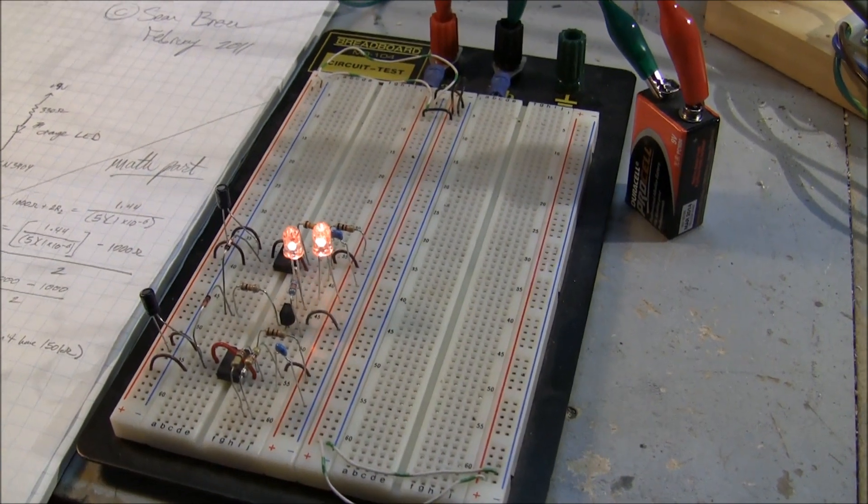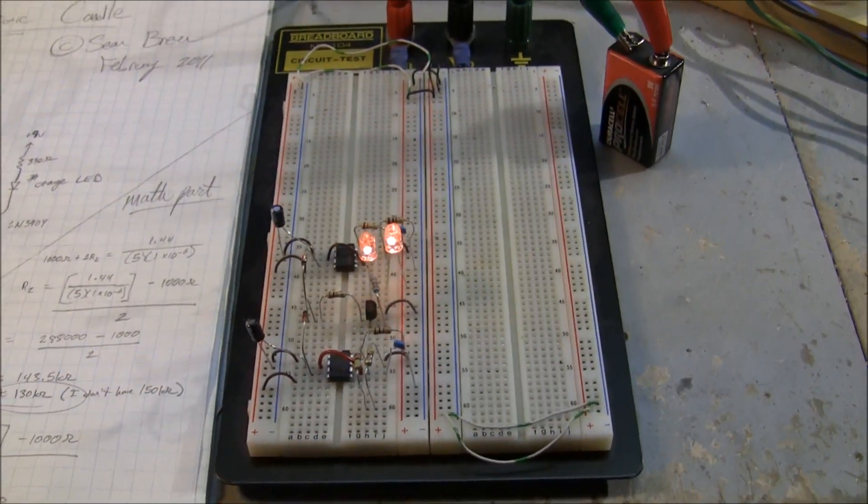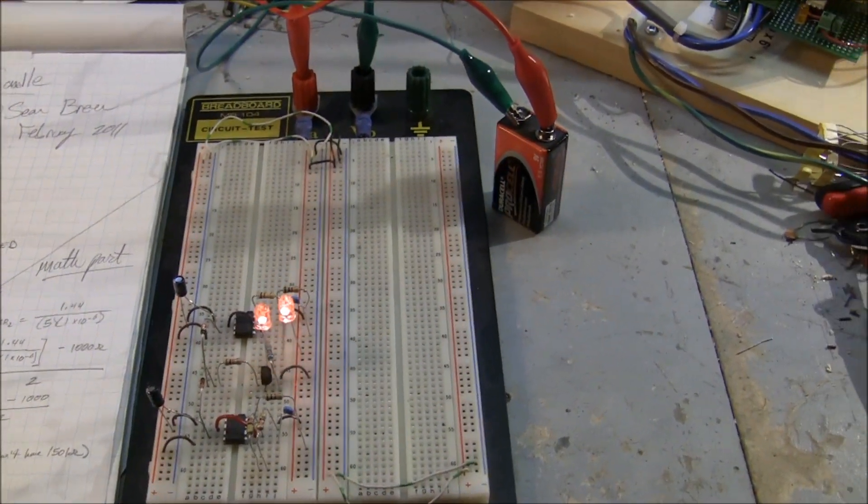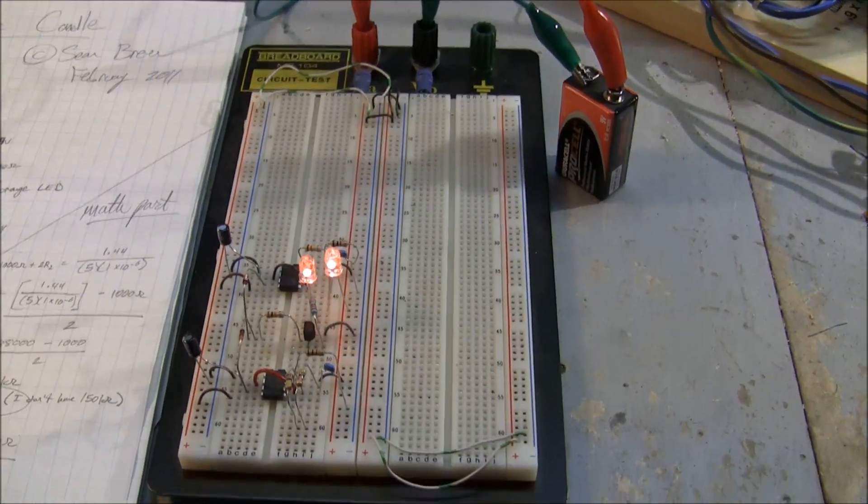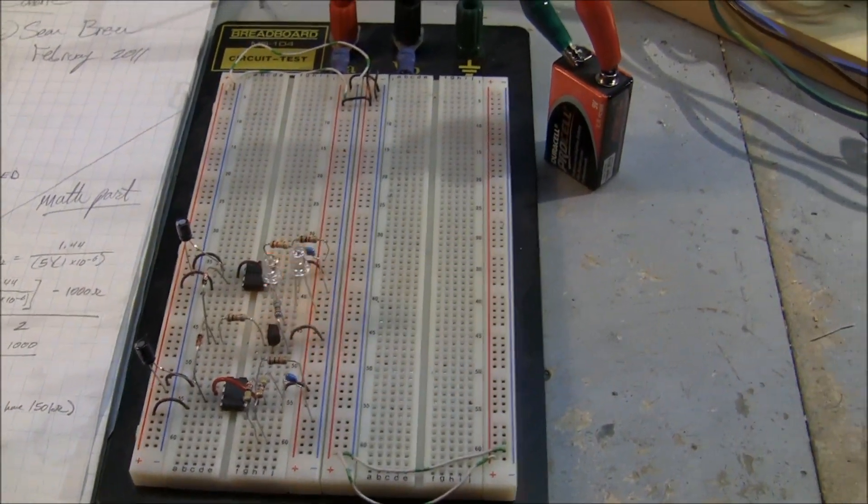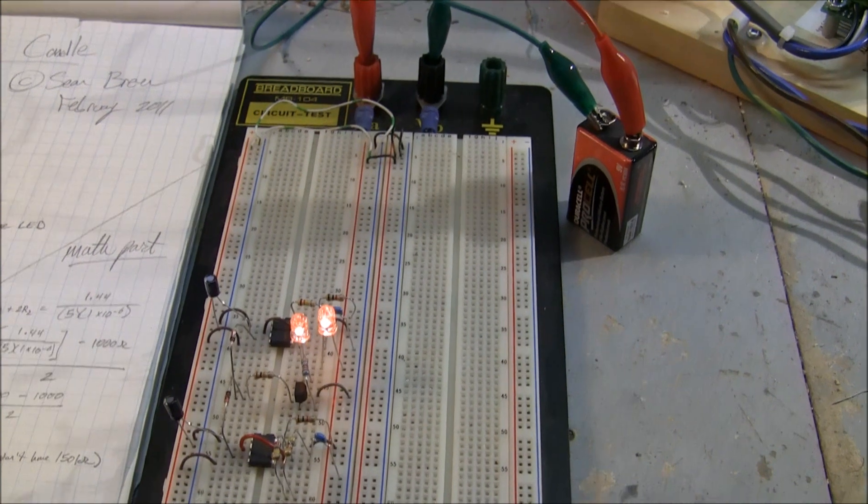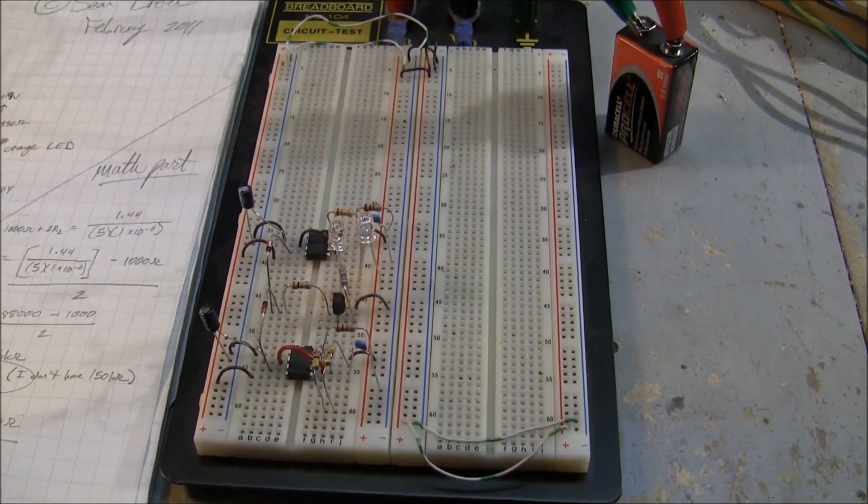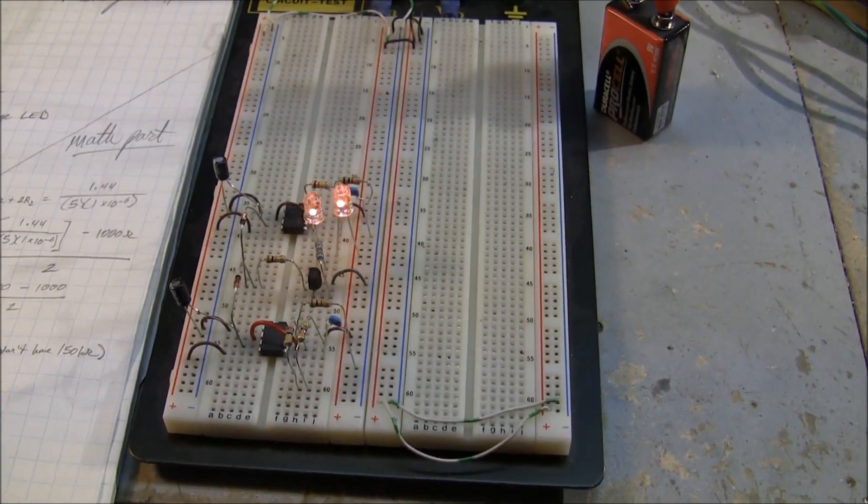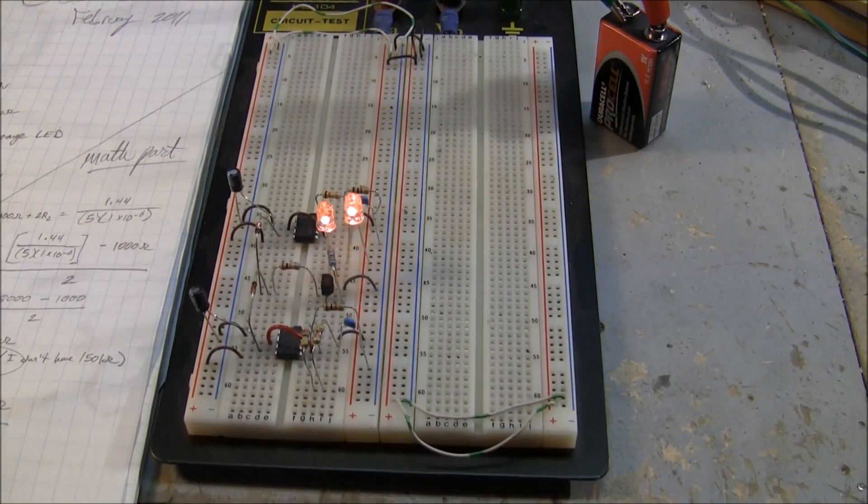When I'd use this for my Christmas display, I actually ran it off a transformerless power supply and used it to fire a random phase triac and flicker a little light bulb, an orange light bulb in a lamp post that I put on my front lawn. If I can find the video, I'll attach it after this.